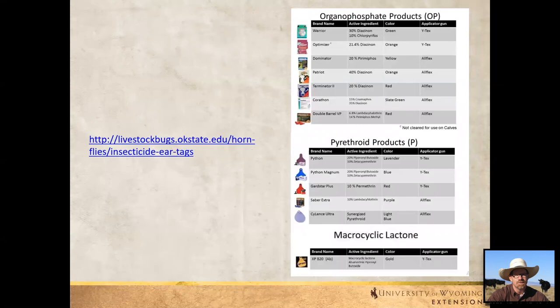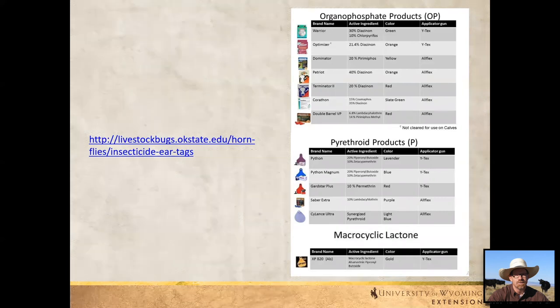A really good website for this is livestockbugs.okstate.edu, hornfly/insecticide ear tags. Justin Talley is a livestock entomologist there who is really evaluating these products. Products are grouped by chemical class: organophosphates at the top, pyrethroid products in the middle, and macrocyclic lactones at the bottom. You'd want to select one from the organophosphates one year, then something from the pyrethroids the next year — not using the same class of chemical year in and year out.